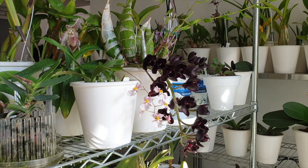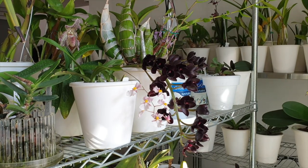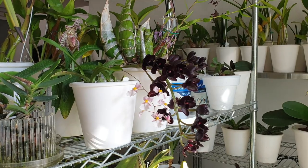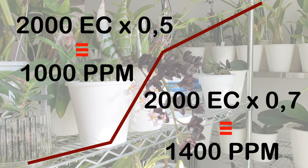I'll leave a link in the description to a PPM-to-EC conversion formula where you can type in your values and get results. For example, 2000 EC times 0.5 equals 1000 PPM, but using the 0.7 scale, 2000 EC comes out at 1400 PPM. This is why the majority stick with parts per million — it removes the variable of conversion, allowing for better across-the-board comparison of what we use in our nutrient solution.